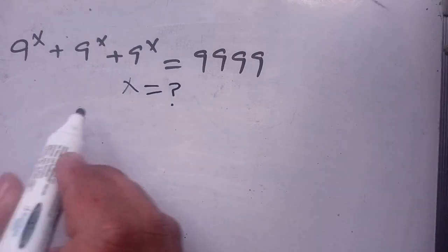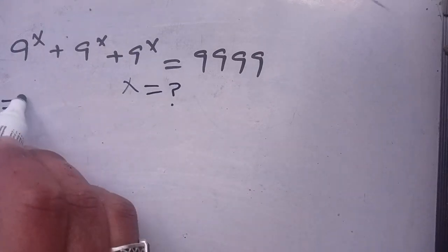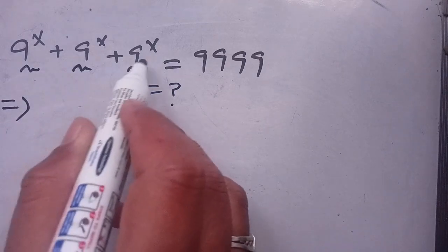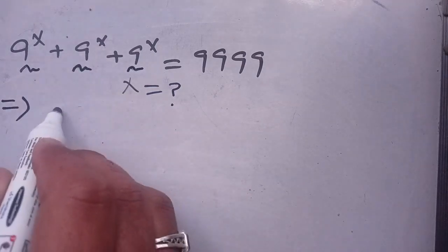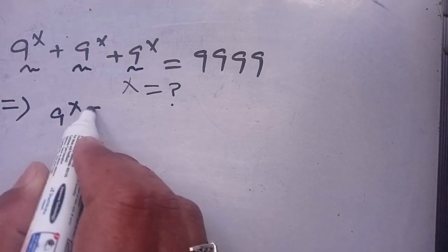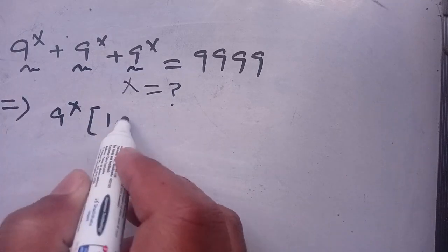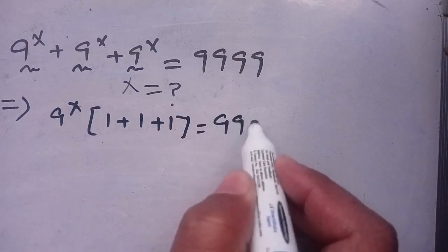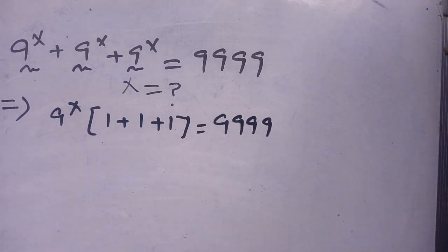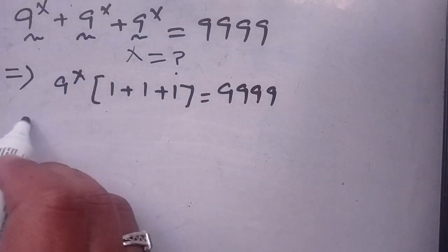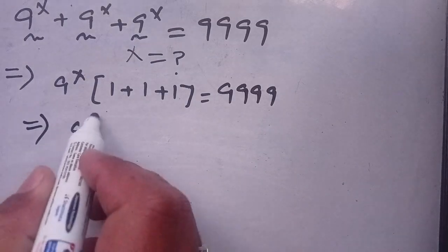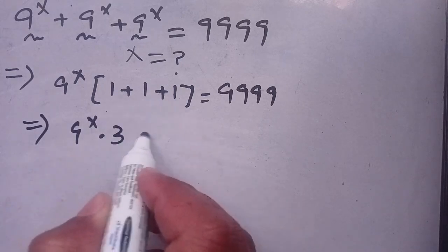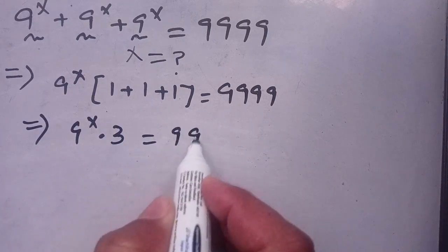Let us solve this. First of all, we see that 9 to the power x is common on each term on the left hand side. We take out 9 to the power x as a common factor, and the remaining terms give 1 plus 1 plus 1, so we have 9 to the power x times 3 is equal to 9999.